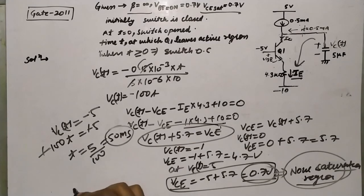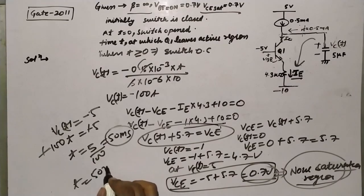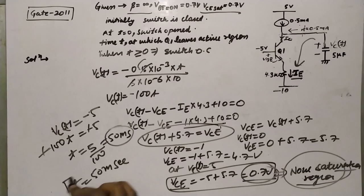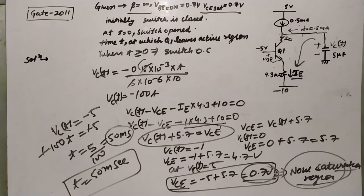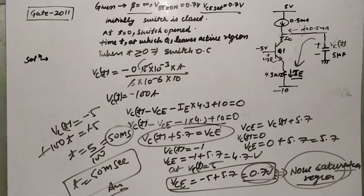So t equals 50 milliseconds is the time at which the transistor switches from the active region to the saturation region. This is the answer. Thank you.